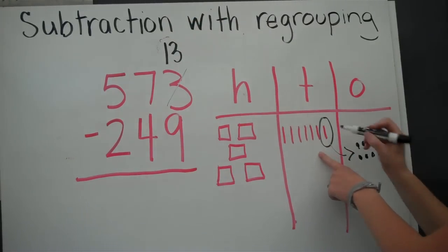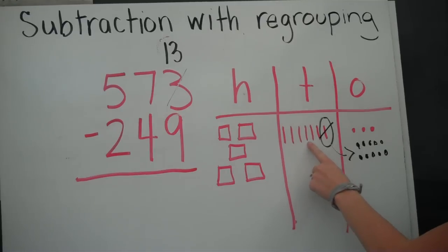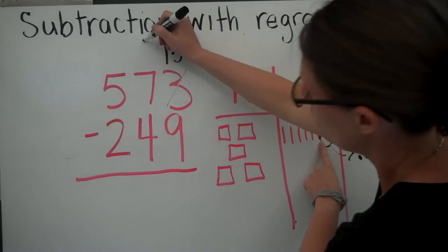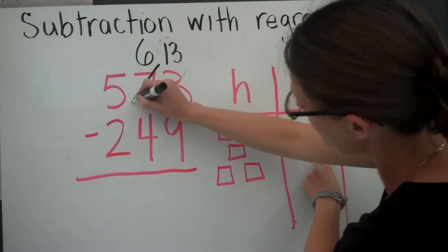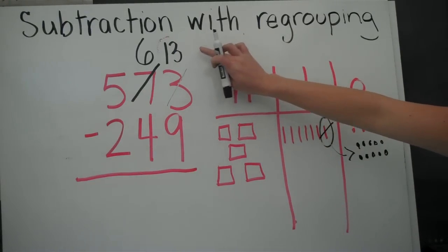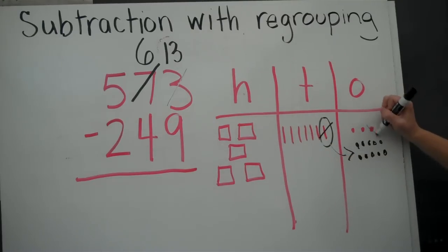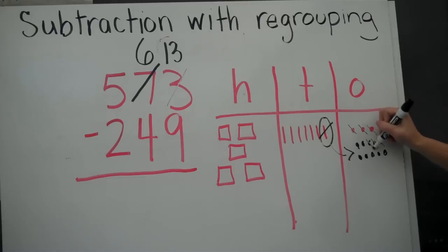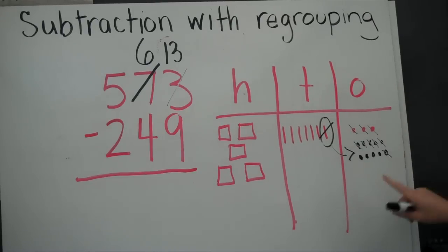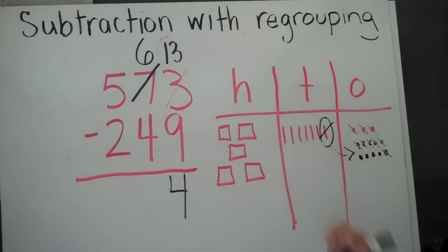I no longer have seven tens. I have 6. So I'm going to put a 6 here and cross that 7 out. Now I can subtract because now I have 13 minus 9. I'm going to cross off 9, and now I'm left with 4 ones. I'll put that 4 in the ones column.